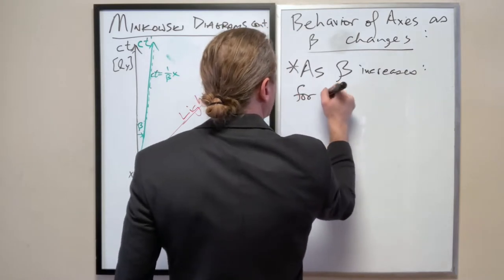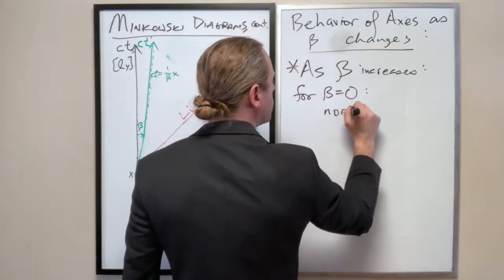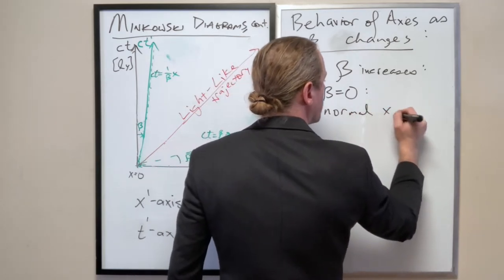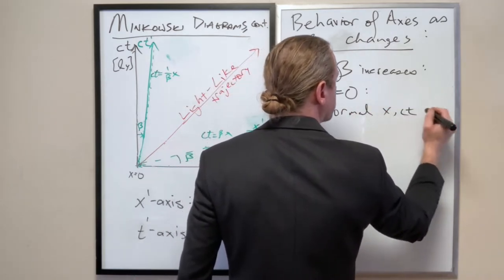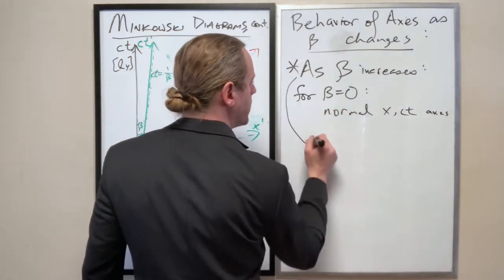So for beta equals 0, we have the normal x and t, or ct axes, and then now, as beta increases.